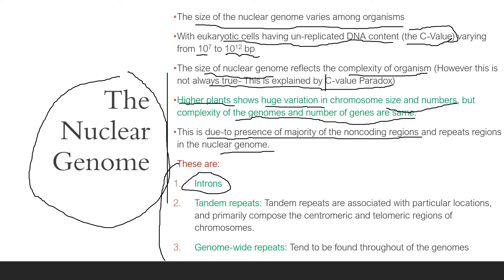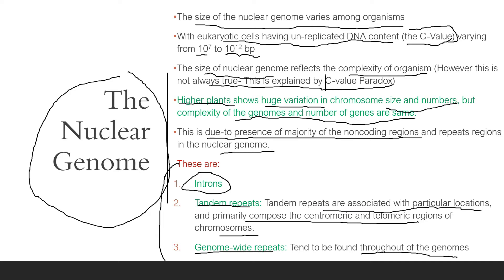Some of the unnecessary parts present in a nuclear genome that add to its size include: introns, tandem repeats — which are associated with particular locations and primarily compose the centromeric, telomeric, and genetic regions of chromosomes — and genome-wide repeats, which tend to be distributed throughout the genome. These three things are extra to the nuclear genome and have no sort of characteristic features.